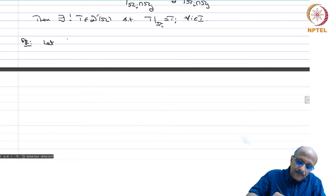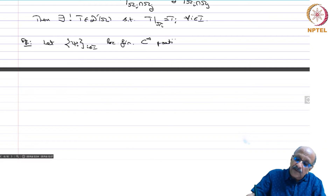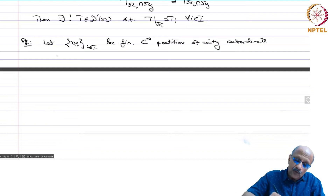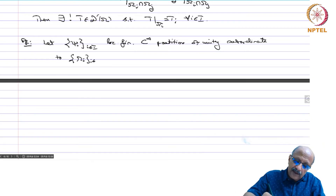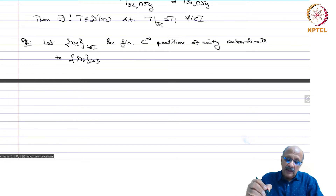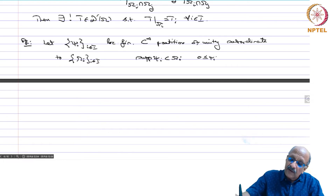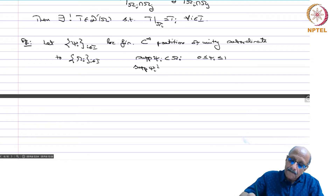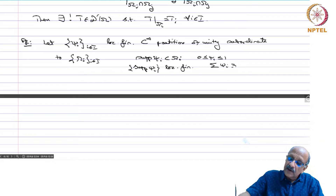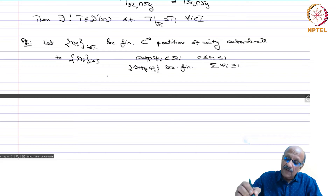As usual, we take {psi_i}_{i in I} to be a locally finite C∞ partition of unity subordinate to {omega_i}_{i in I}. The support of psi_i is contained in omega_i, 0 ≤ psi_i ≤ 1, the supports form a locally finite family, and sigma psi_i equals 1 identically.